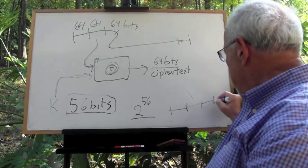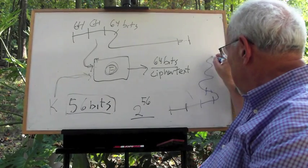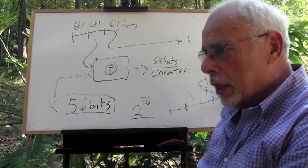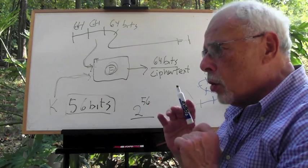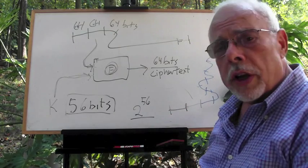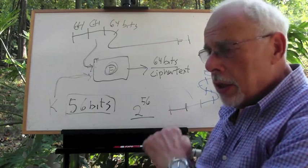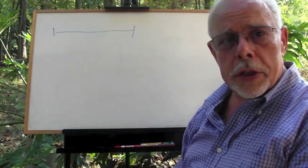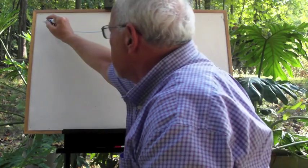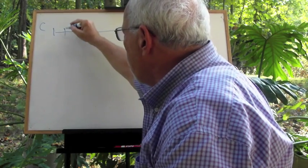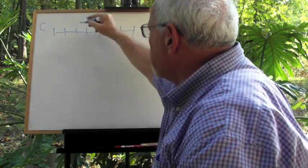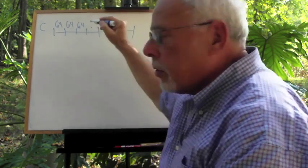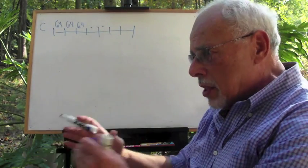Every time we do so, we keep adding block after block to the ciphertext. When we're done, we take the ciphertext and send it over insecure lines to the intended reader. The intended reader receives over insecure lines the ciphertext, which they know is a concatenation of 64-bit blocks. That's what they receive.